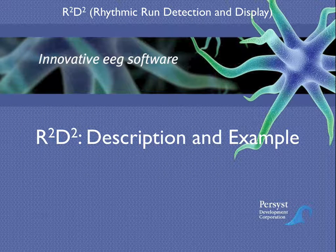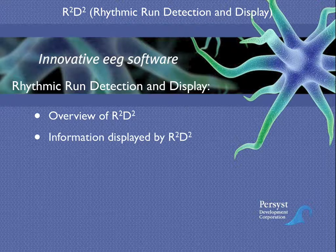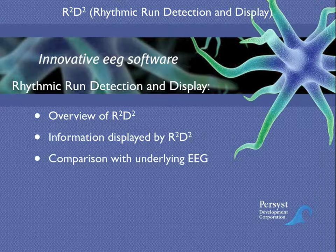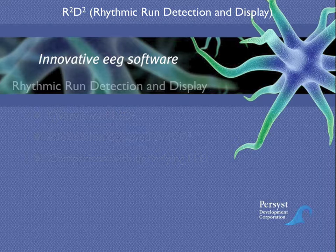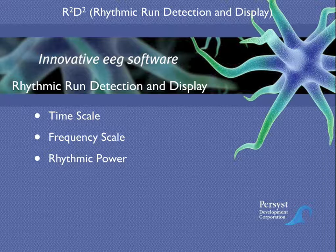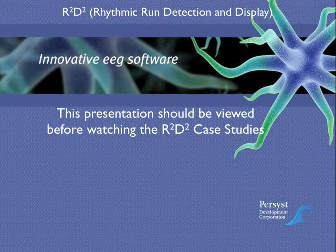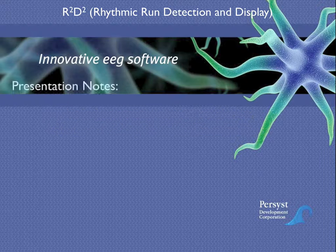The following animation will present an overview of the rhythmic run detection and display trend: how information is displayed in the trend and what it can show us about the underlying EEG. This overview will include a description of the time scale, the frequency scale, and a description of rhythmic power in the EEG. This presentation should be viewed before watching the case studies for rhythmic run detection and display, also known as R2D2.